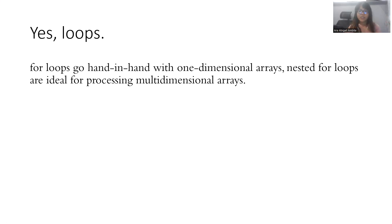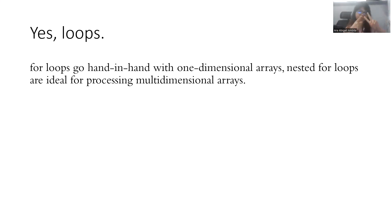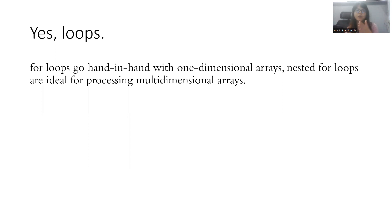So why do we have to use nested loops? When we say nested loop, we have a loop, and then inside that loop, we have another loop. Because, let's say, we have a two-dimensional array — the outer loop will loop through the rows, and the inner loop will loop through each of the values for each row.